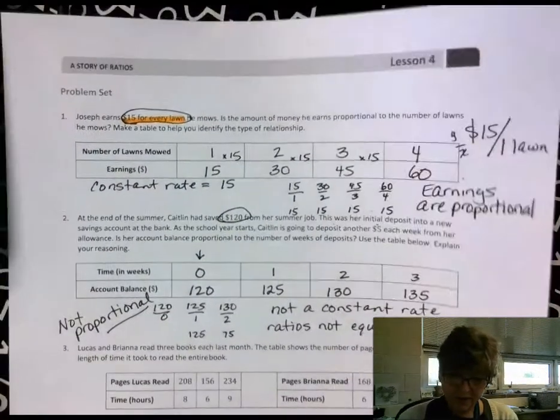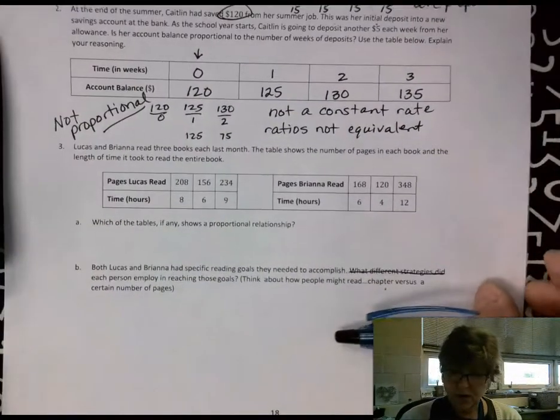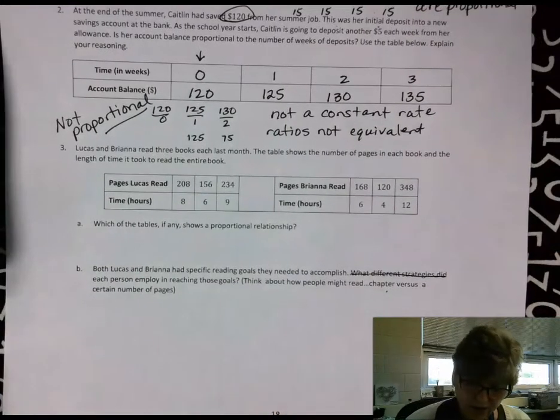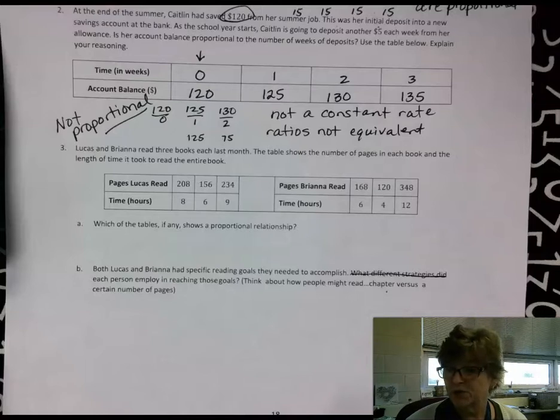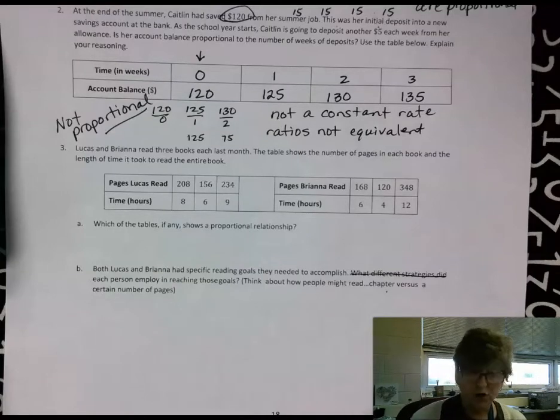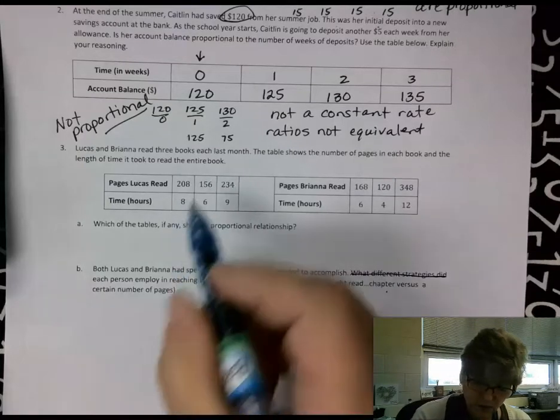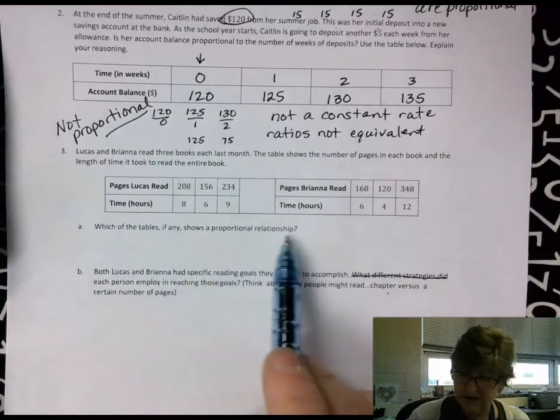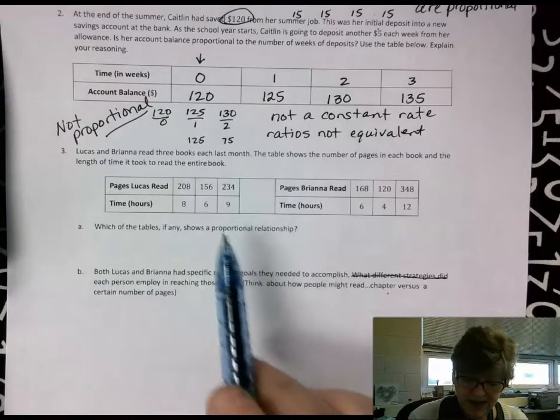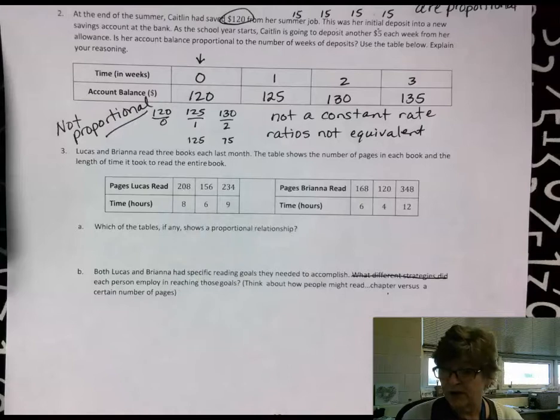So let's come down to number three. Lucas and Brianna read three books each last month. The table shows the number of pages in each book and the length of time it took to read the entire book. So if we start right here, it's hard for me to determine if it is a proportional relationship because I don't know if there's a constant rate of change.